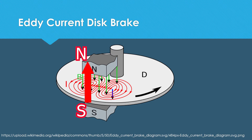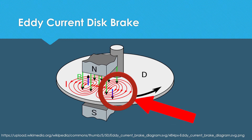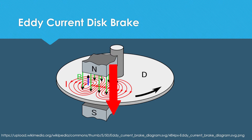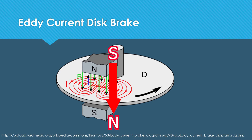This repulsion decreases the speed of the disc. The same thing happens for the right side, but here the magnetic flux is decreasing, so the eddy current direction is clockwise, which makes the direction of the induced magnetic field up to down. This magnetic field attracts the source magnetic field, and this also decreases the speed of the disc.